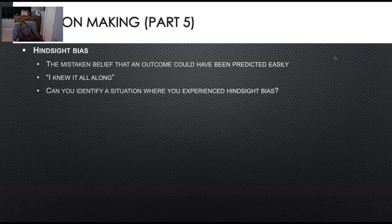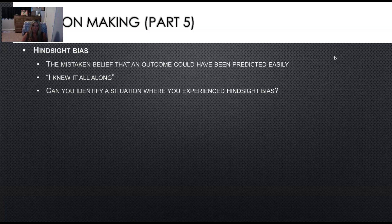Know what hindsight bias is — that is the 'I knew it all along' phenomenon, the mistaken belief that an outcome could have been predicted easily. Just know what that is and understand an example of hindsight bias if you were to see it on a test. Think about whether you can identify a situation where you actually experienced hindsight bias yourself.